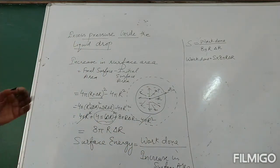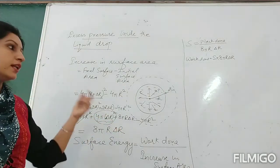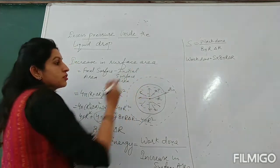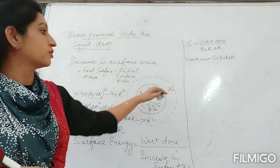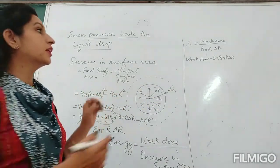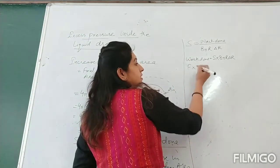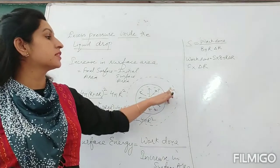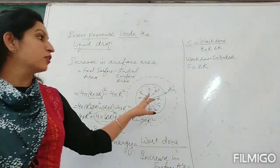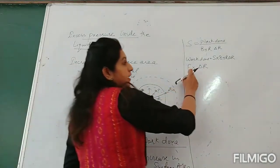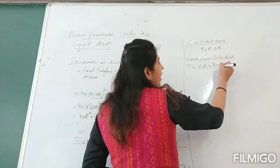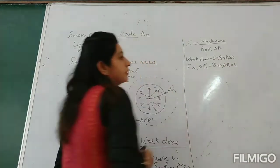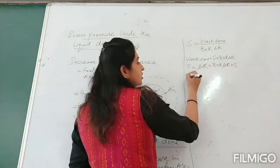Due to this excess pressure, force acts outward and distance is also outward, because the radius is expanding by delta r in the outward direction. Force and distance are in the same direction, so work done equals force × delta r. Therefore: F × δr = 8πR·δr × S. Delta r cancels from both sides. Force can be written as pressure times area.